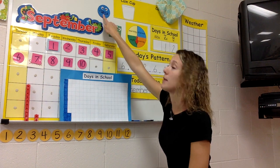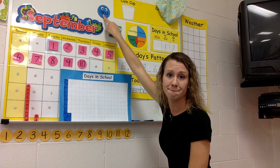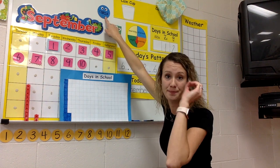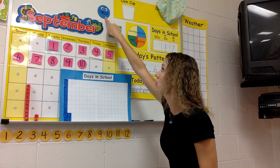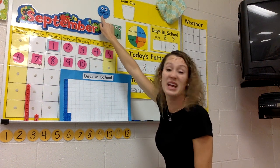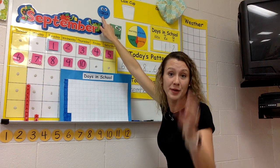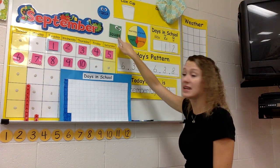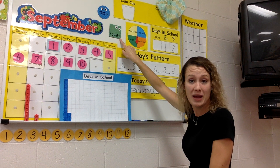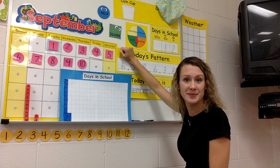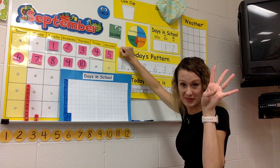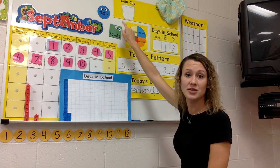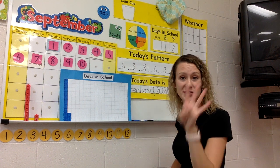This is a circle. How many sides does it have? Zero. How many angles does it have? Zero. This is a square. How many sides? Four — you got it. How many angles? How many corners?